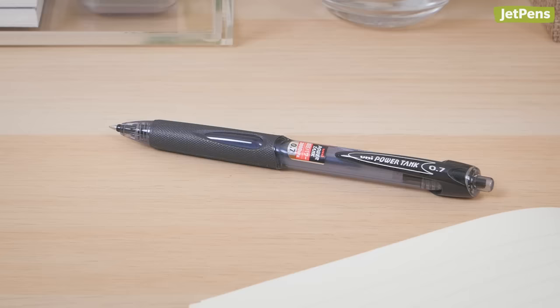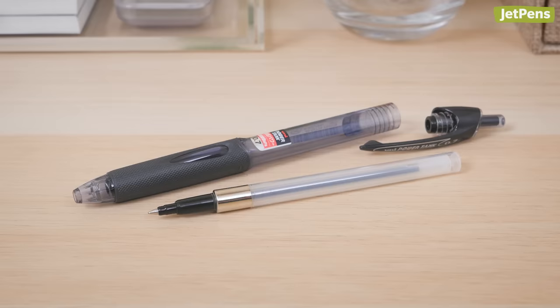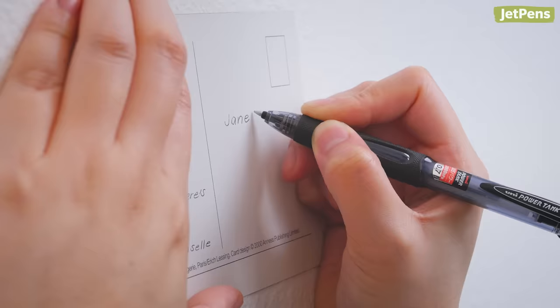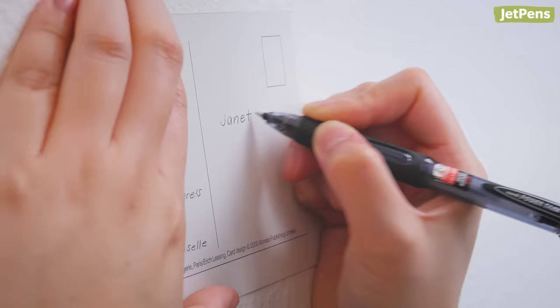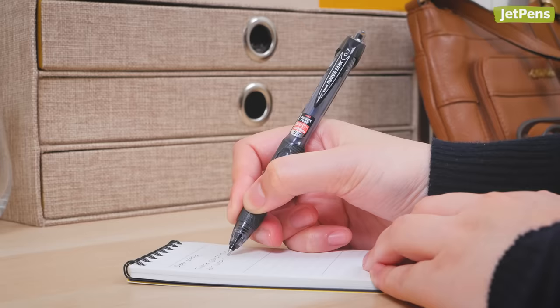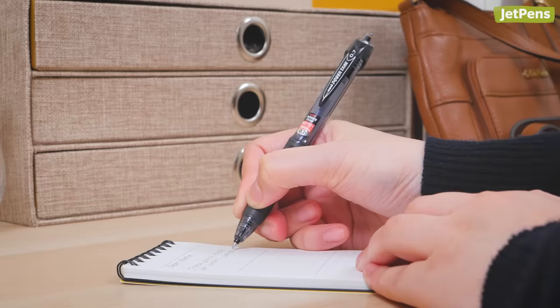The Uni Power Tank is the pressurized pen of choice for JetPen staff members. It utilizes internal compressed air pressure, which allows it to continually push out ink, making it a reliable pen in emergencies. It's easier to write with than the AirPress, so if you need to write for longer, this is the pen for you.